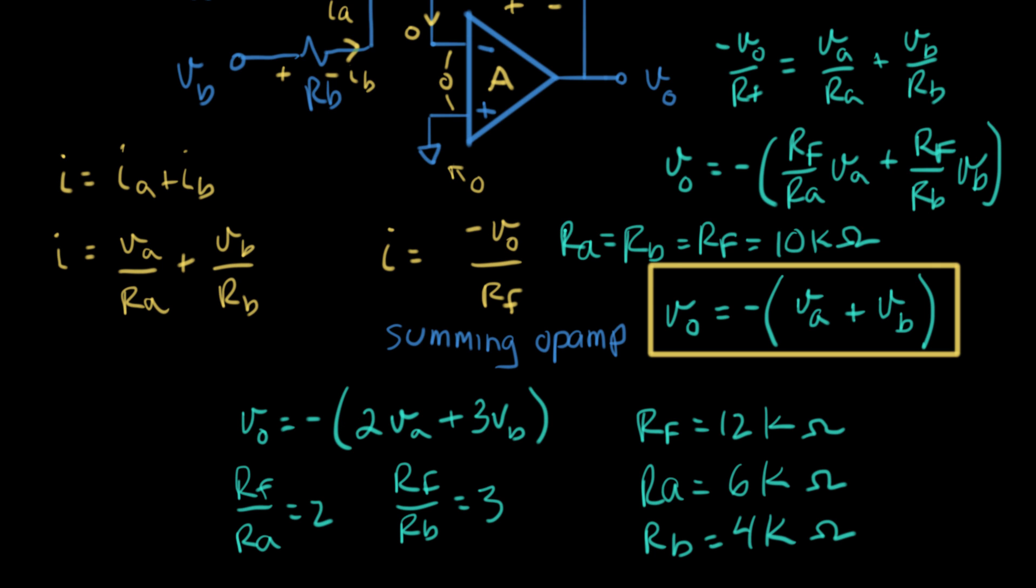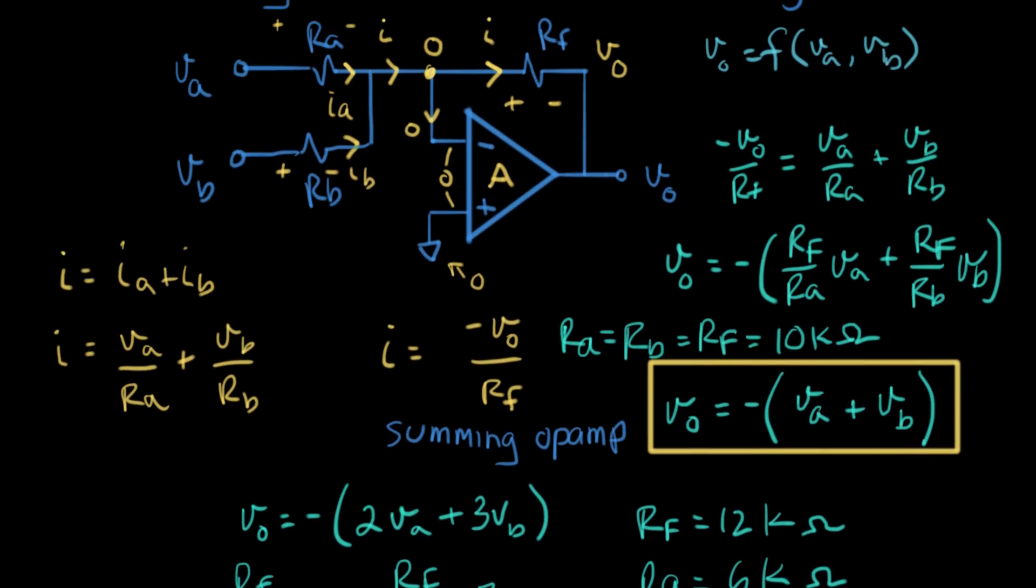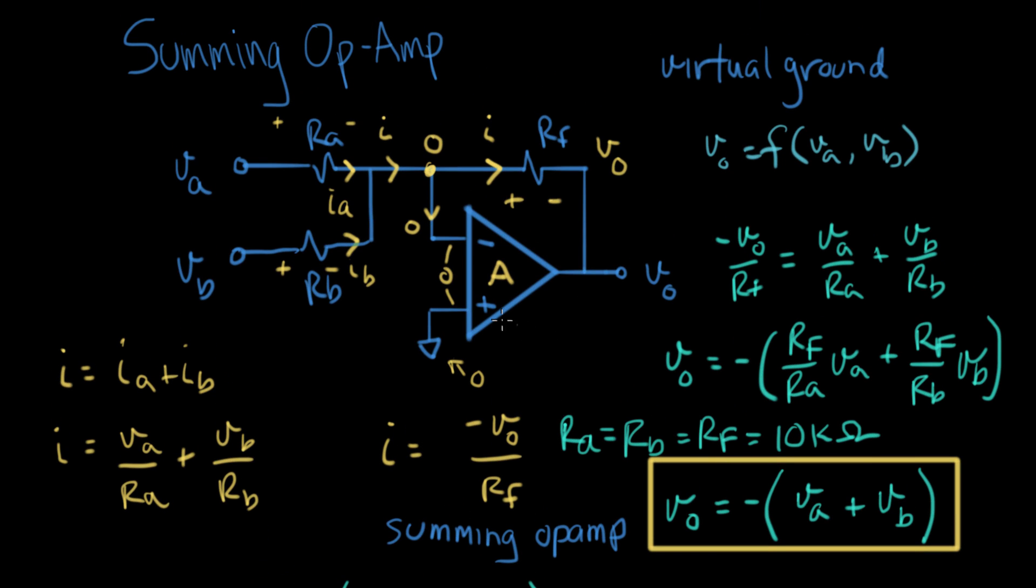I'm going to fill those out on the top schematic. RF is 12k, RA is 6k ohms, RB is 4k ohms. We've designed a circuit that implements our summing function. This is a pretty useful op amp circuit.